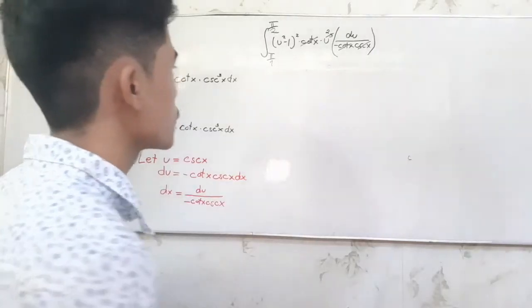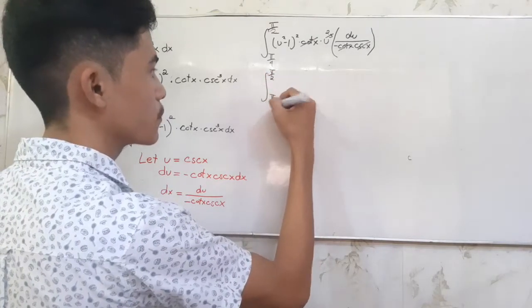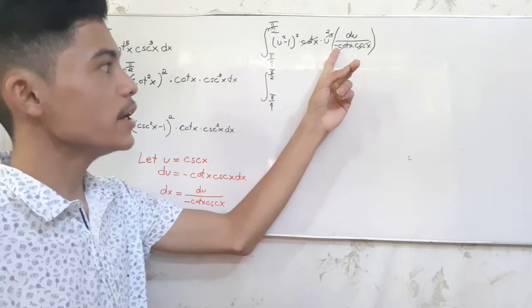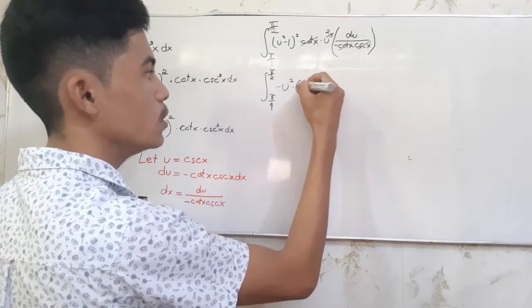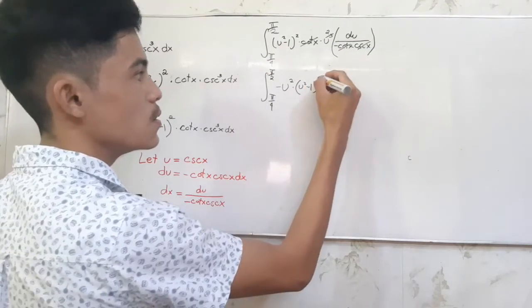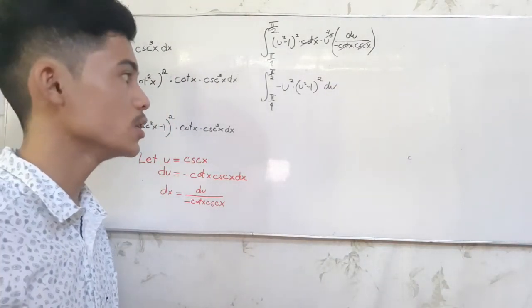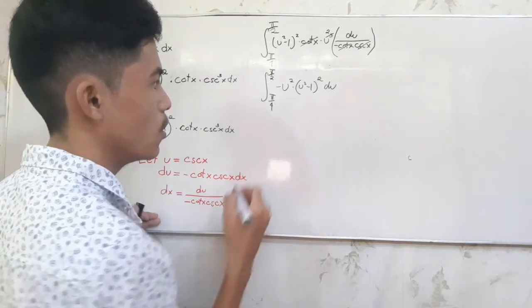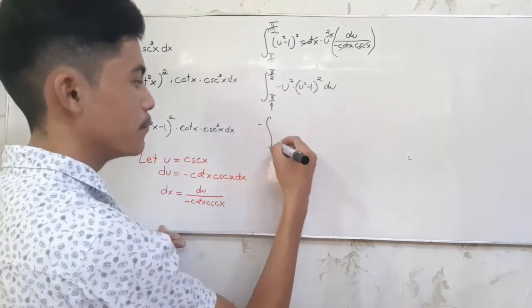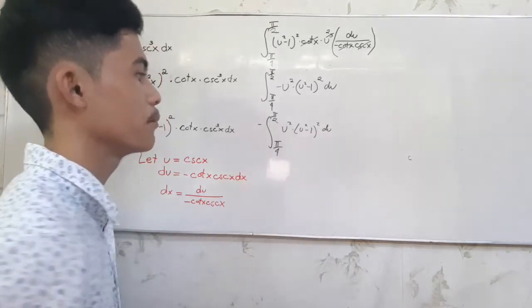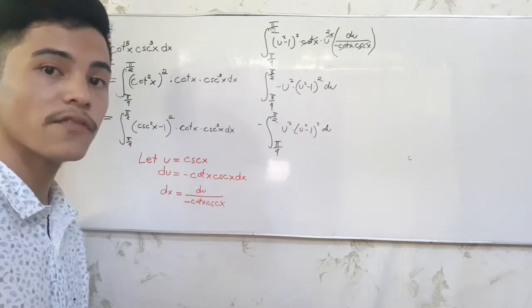Don't forget the interval. Let's rewrite our function with the intervals. Since we have a negative here, our u squared expression will become negative. We have negative 2 multiplied to u squared minus 1, quantity squared, and du. Using the constant multiple rule of integration, we can move the negative sign before the integral sign. And what we need to do next is to expand this term using the FOIL method, then distribute u squared from the result using the distributive property of multiplication.